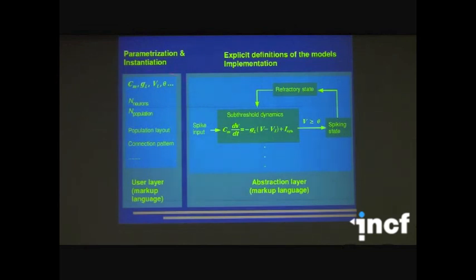And let's take a deeper look. In the user layer, we specify the values of those neuron parameters and number of neurons, number of populations, layout, and so on. And in the abstraction layer, we specify, we give the exact complete equations and the rules for changing states inside neurons, inside your model, and also connectivity, how you create connections and so on. And we use markup languages for both layers.